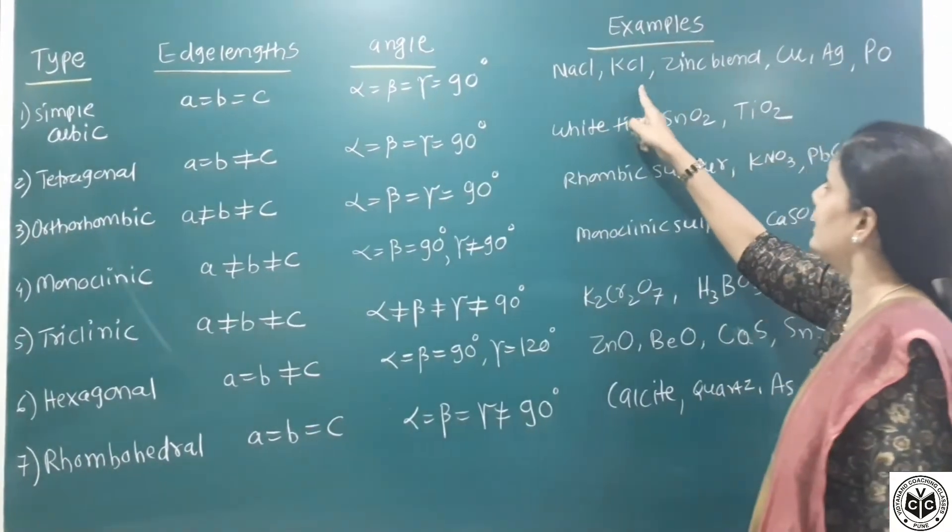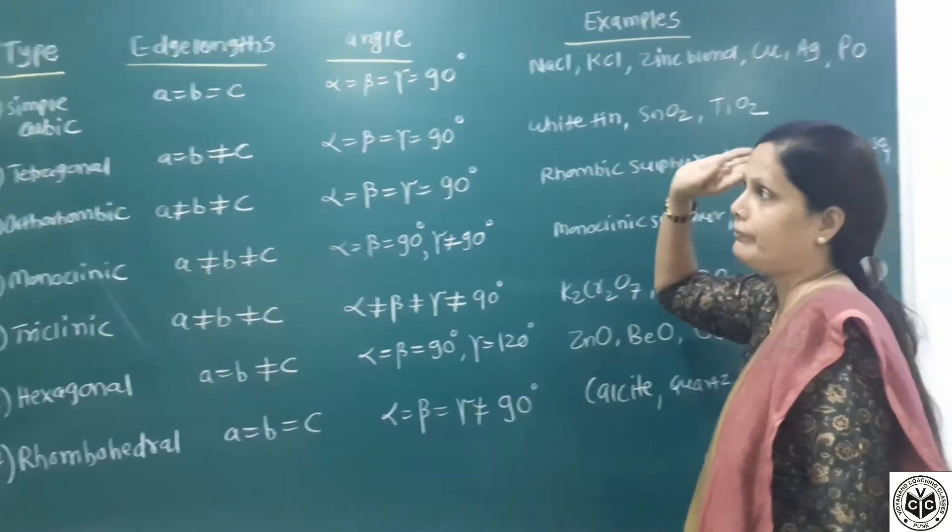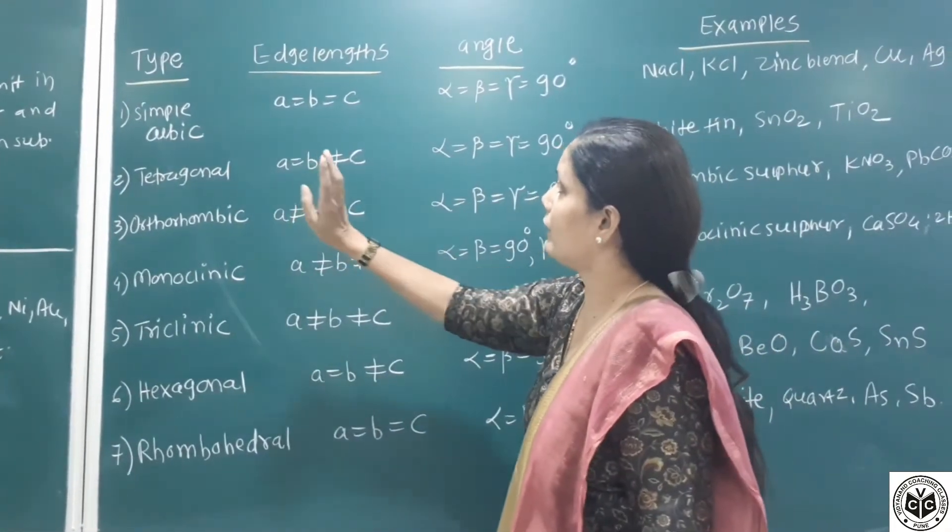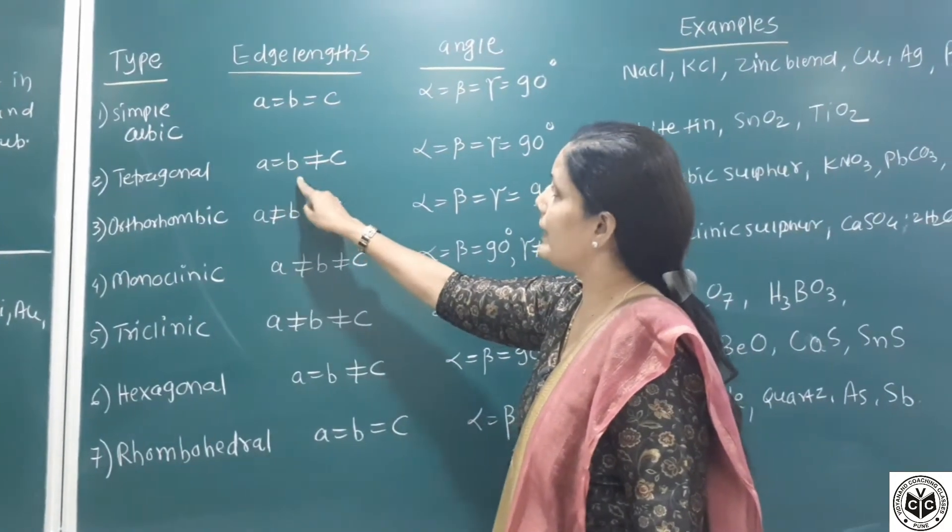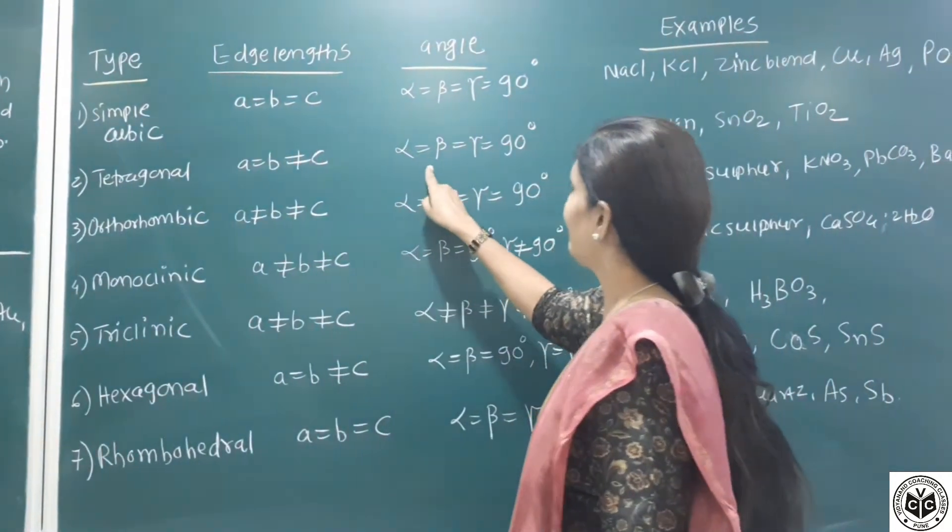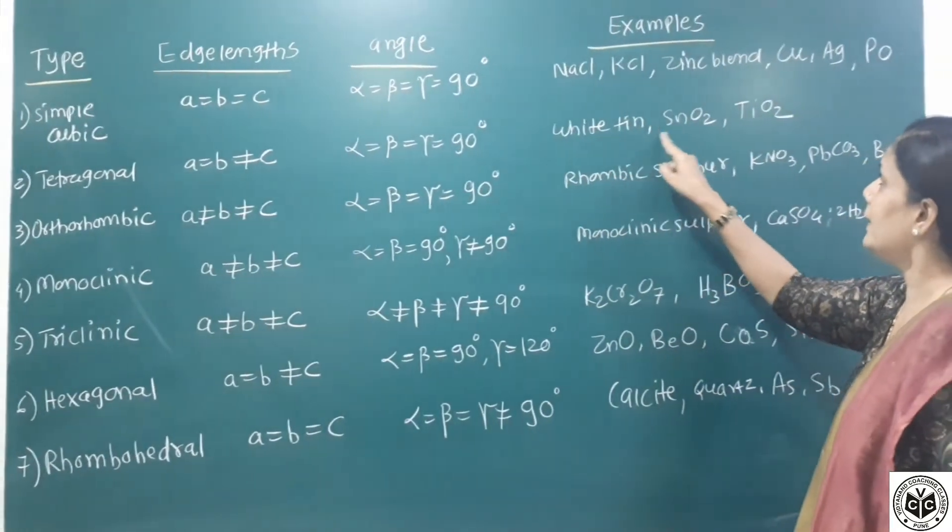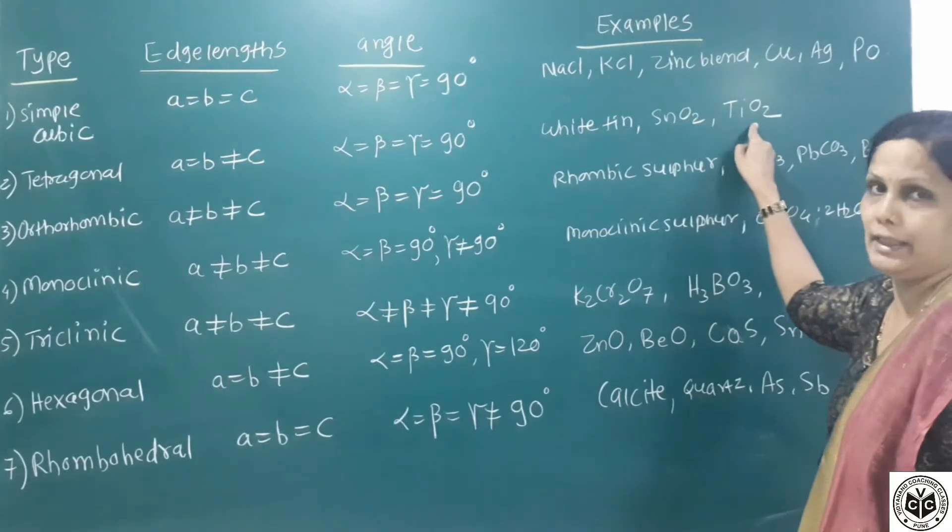First type is simple cubic. Edge length A equals B equals C. Angle alpha equals beta equals gamma equals 90 degrees. Examples include white tin SnO2, TiO2 titanium oxide. Second type is tetragonal. A equals B but not equal to C. Alpha equals beta equals gamma equals 90 degrees. Examples are white tin, SnO2, TiO2.